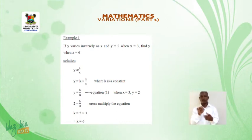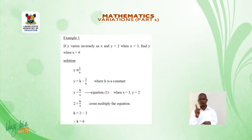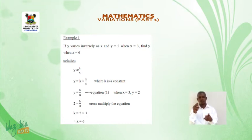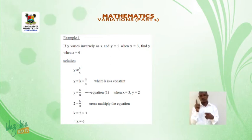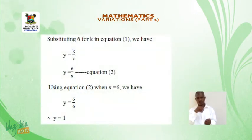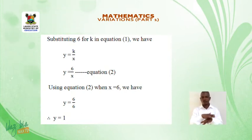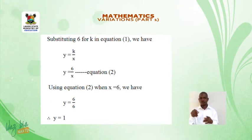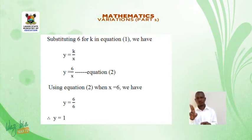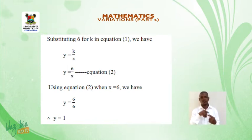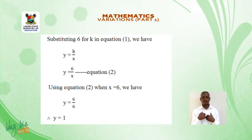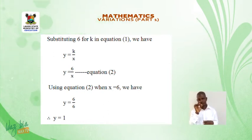When x = 3, y = 2: 2 = k/3. Cross-multiplying gives k = 2 × 3 = 6. Substituting k = 6 into equation 1: y = 6/x (equation 2). Using equation 2, when x = 6: y = 6/6. Therefore, y = 1.